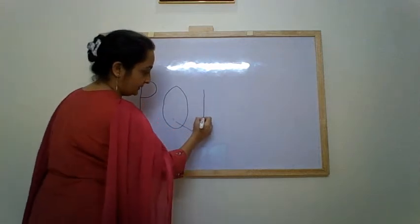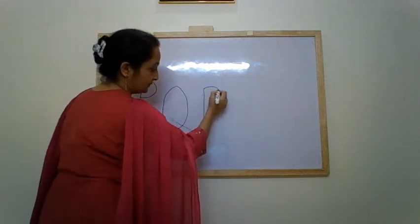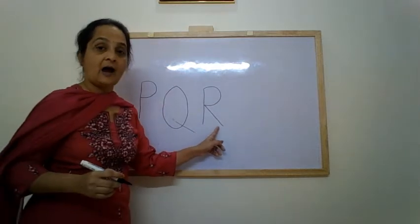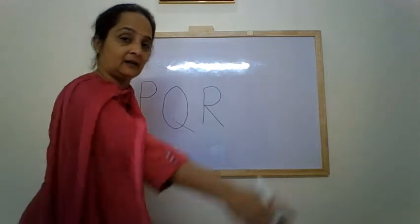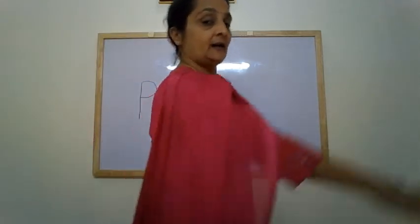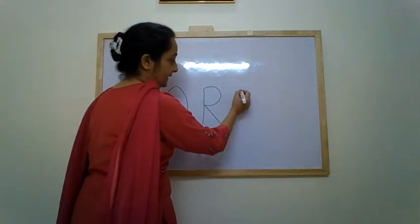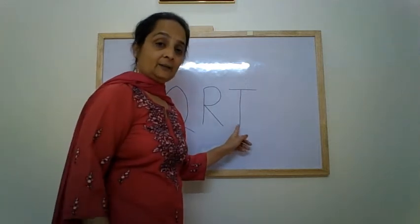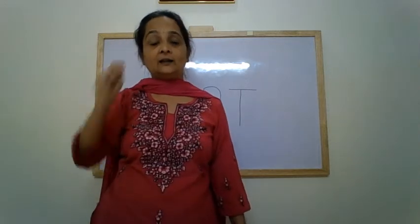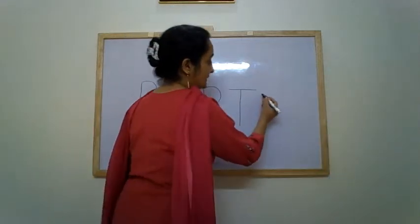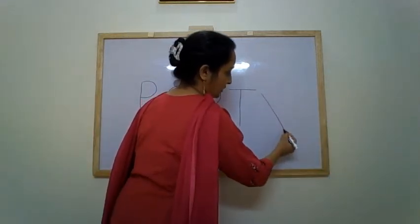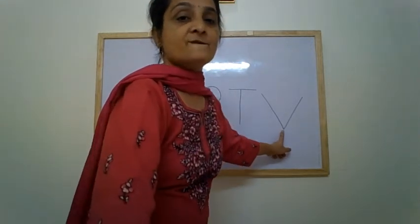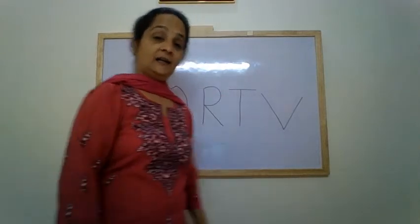Next is letter R: standing line, slanting line, small forward curve, slanting line — letter R. R makes the sound R. Then letter T: standing line with a sleeping line on top — T makes the sound T. Next, letter V: slanting line, go down, stop, come up again — letter V. V makes the sound V.